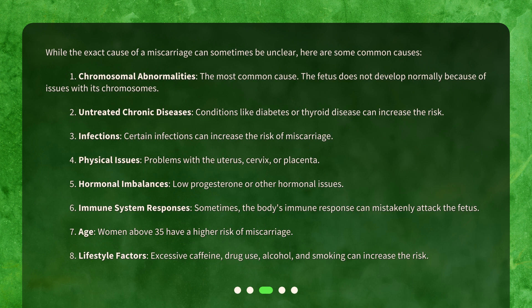While the exact cause of a miscarriage can sometimes be unclear, here are some common causes. One: chromosomal abnormalities — the most common cause — where the fetus does not develop normally because of issues with its chromosomes. Two: untreated chronic diseases, as conditions like diabetes or thyroid disease can increase the risk. Three: infections, as certain infections can increase the risk of miscarriage.